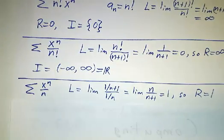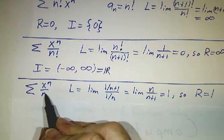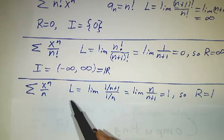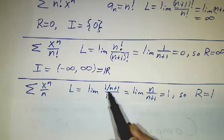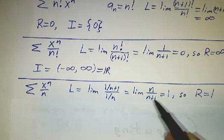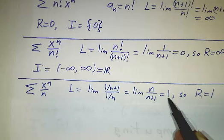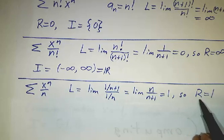And finally, let's look at the sum of x^n over n. Now we take L as the limit of 1/(n+1) divided by 1/n. That limit is 1, so radius of convergence is 1.